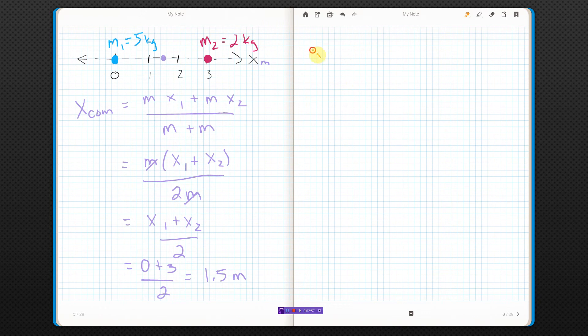The position of the center of mass equals the mass of the first one times the position of the first one plus the mass of the second one times the position of the second one divided by all the mass. Wow. Five times zero is, everybody? Zero. Plus two times three is six. Five plus two is seven. And I get that the position of the center of mass is six-sevenths of a meter.